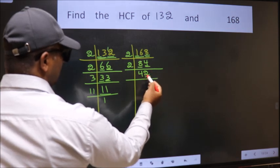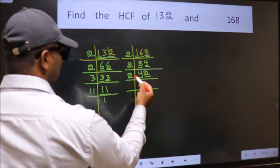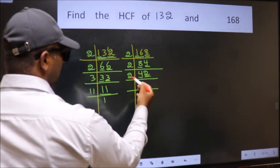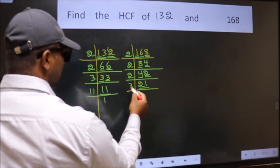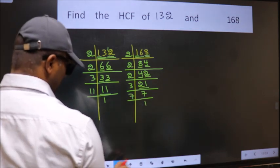Last digit 2, even, so take 2. First number 4, when do we get 4 in 2 table? 2 twos is 4. The other number 2, when do we get 2 in 2 table? 2 ones is 2. Now 21 is 3 times 7. 7 is the prime number, so 7 ones is 7.